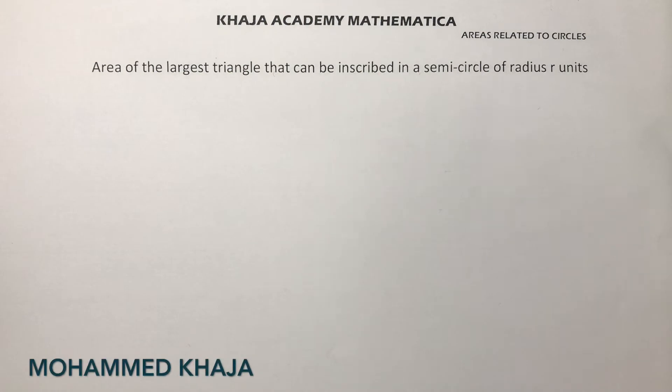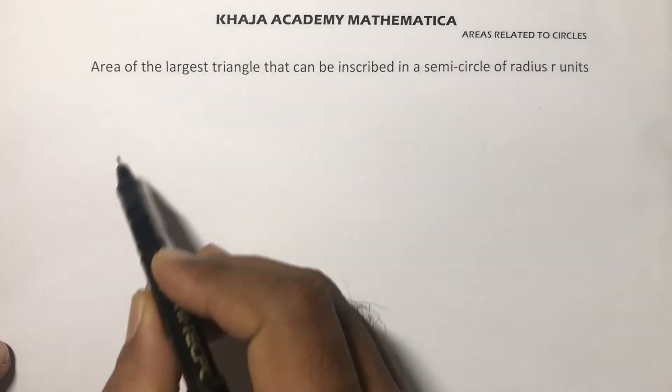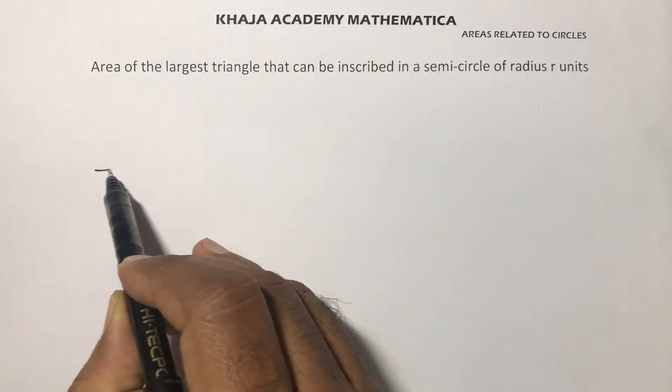Area of the largest triangle that can be inscribed in a semicircle of radius R units. So in the problem, draw the semicircle.